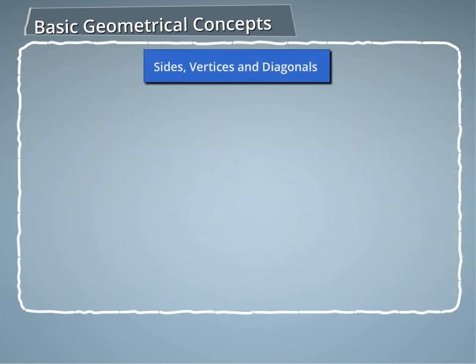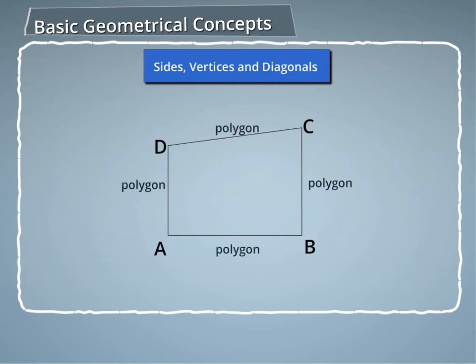Let us understand what the sides, vertices, and diagonals of a polygon are. In the figure on screen, the polygon is made of four line segments: AB, BC, CD, and AD. These are called the sides of the polygon.